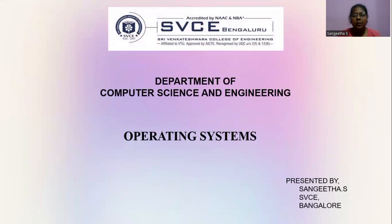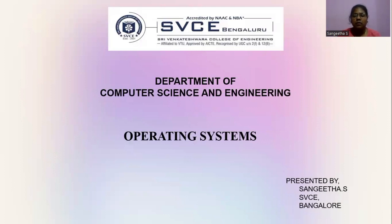What is an operating system? An operating system is a collection of software systems that manages the hardware resources and provides common services to the computer programming. The operating system is the most important system software of the computer systems.